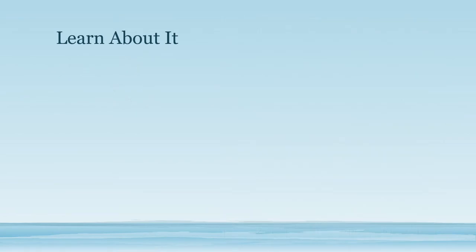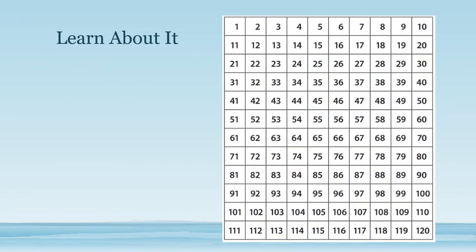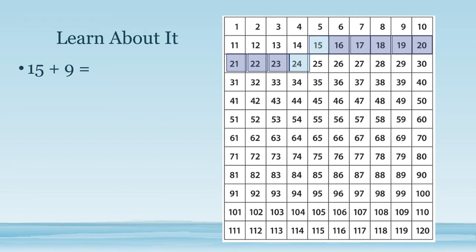Let's try again to see if this works with another number. I'm going to solve the problem 15 plus 9 by counting by 1's: 1, 2, 3, 4, 5, 6, 7, 8, 9. Again, instead of being right below our first addend on the 120 chart, it's one space before on the next row. Remember, it's like we added one less than 10 — it's as if we're adding 10 and then taking one away. So 15 plus 9 equals 24.